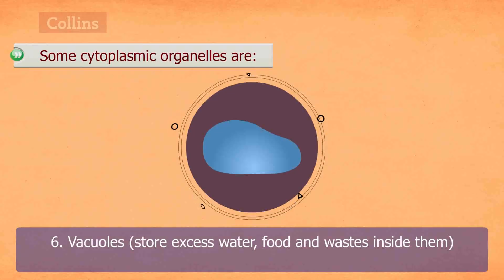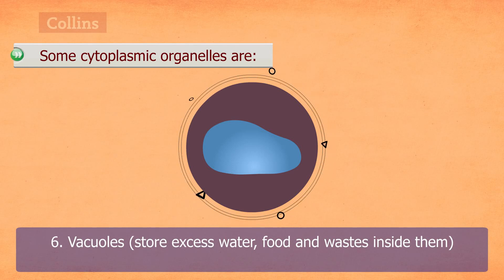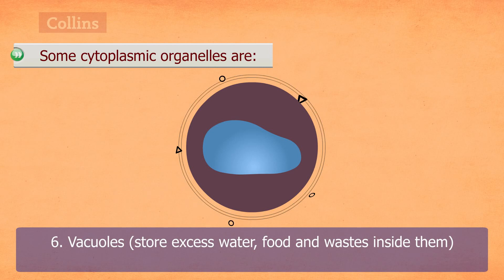Vacuoles. These are sac-like structures enclosed by a membrane. They store excess water, food, and wastes inside them.